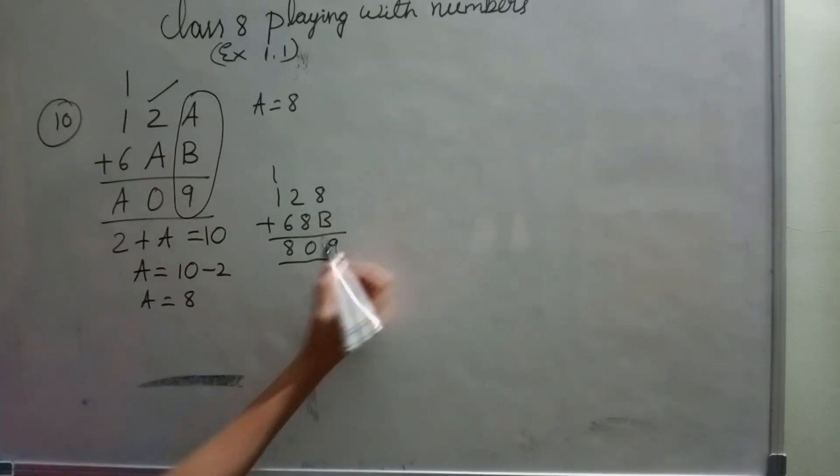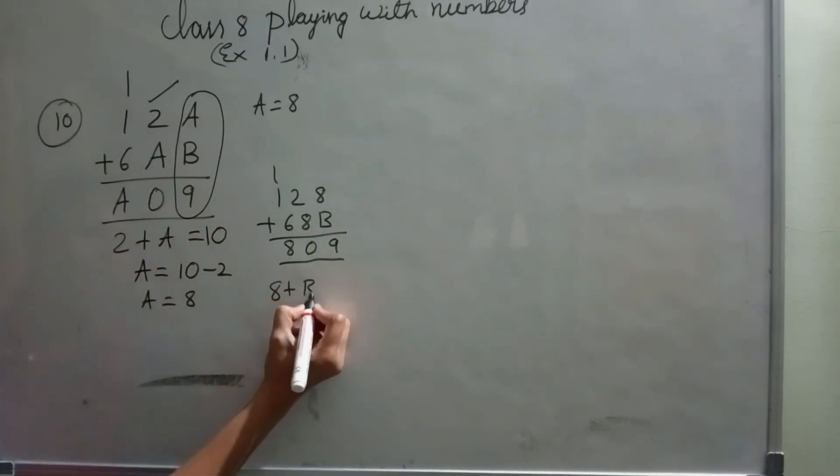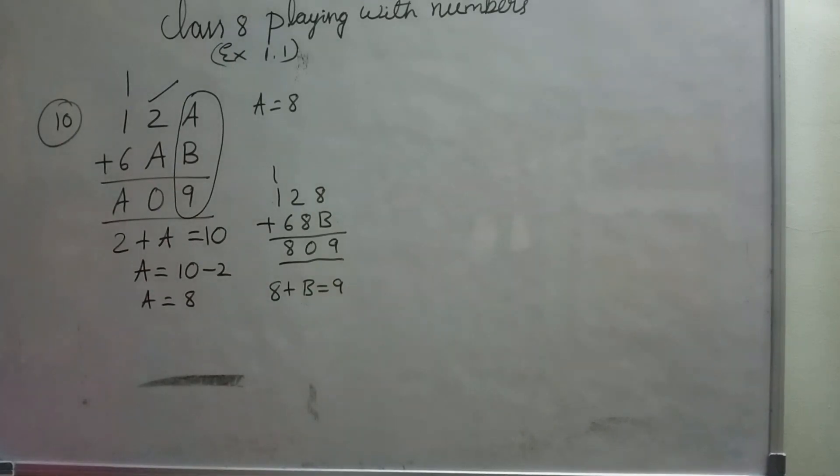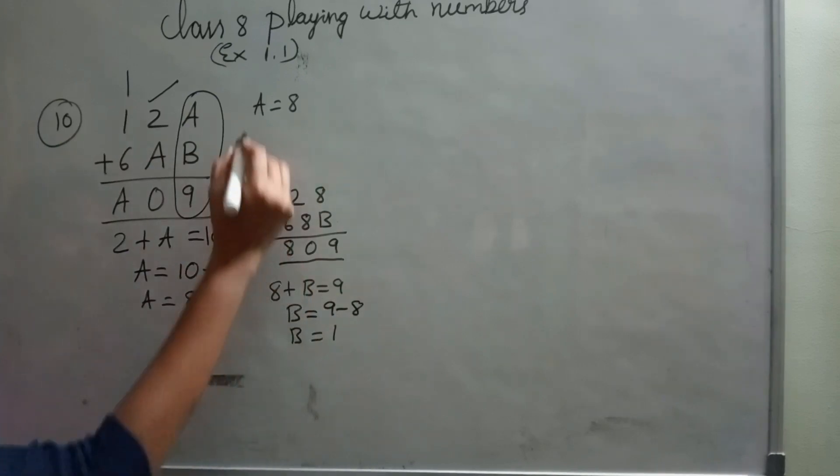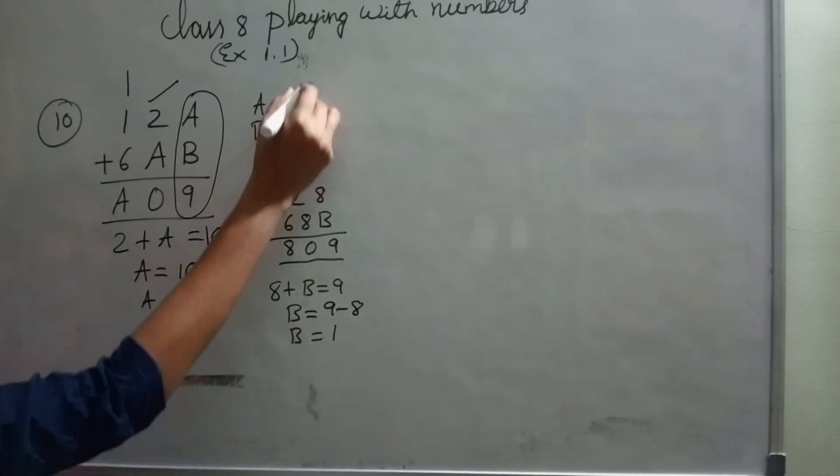Let's do here. 8 plus B. 8 plus B equals 9. This is also not 19 here, because B is a single digit number. So let's solve for 9 only. B equals 9 minus 8. B equals 1.